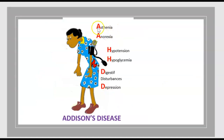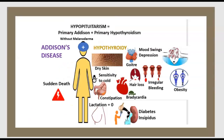Addison disease presents with asthenia, anorexia, hypotension, hypoglycemia, digestive disturbance, and depression. There is no melanoderma. Hypopituitarism involves two diseases: Addison disease without melanoderma, and hypothyroidism.